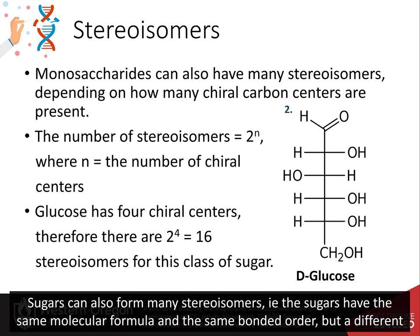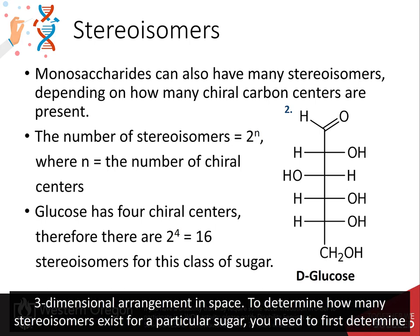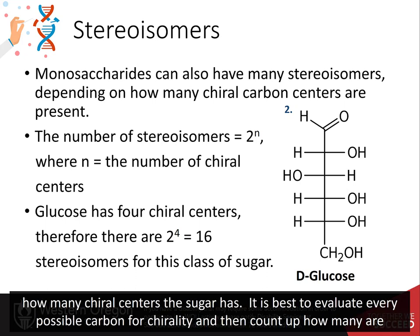Sugars can also form many stereoisomers — that means sugars have the same molecular formula and the same bonded order, but a different three-dimensional arrangement in space. To determine how many stereoisomers exist for a particular sugar, you need to first determine how many chiral centers the sugar has.